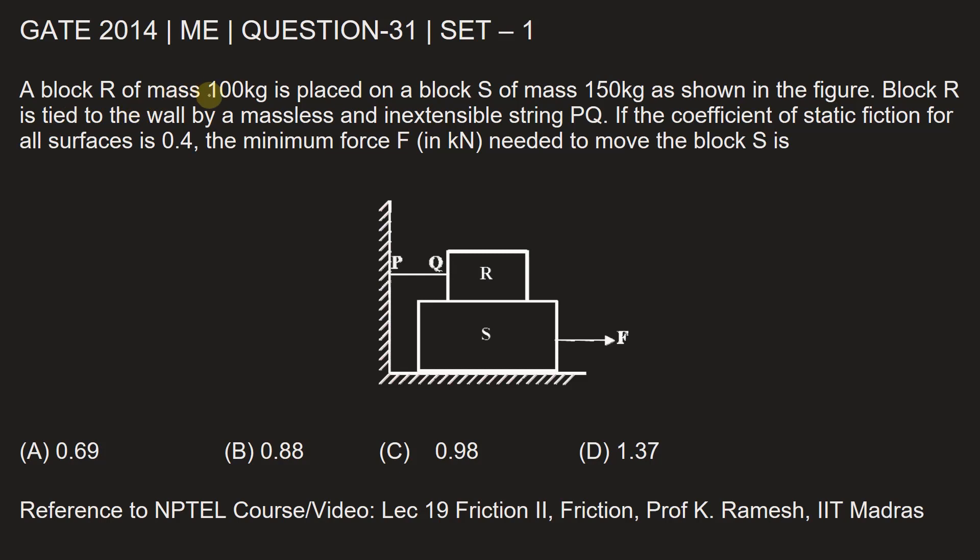A block R of mass 100 kgs is placed on a block S of mass 150 kgs, as shown in the figure. Block R is tied to the wall by a massless and inextensible string PQ. If the coefficient of static friction for all surfaces is 0.4, the minimum force F in kilonewton needed to move the block S is dash.